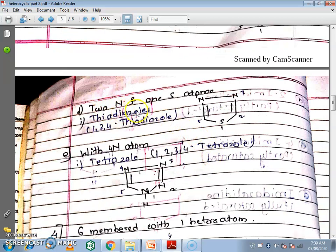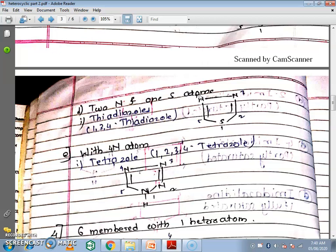Next we will see 5-membered rings with 2 nitrogen and 1 sulphur atom — a total of 3 heteroatoms. The first example is thiadiazole, containing 1 sulphur and 2 nitrogen atoms. 'Thia' means sulphur, 'diazole' means 2 nitrogens. The numbering gives 1,3,4-thiadiazole, with sulphur at position 1, nitrogen at positions 3 and 4.